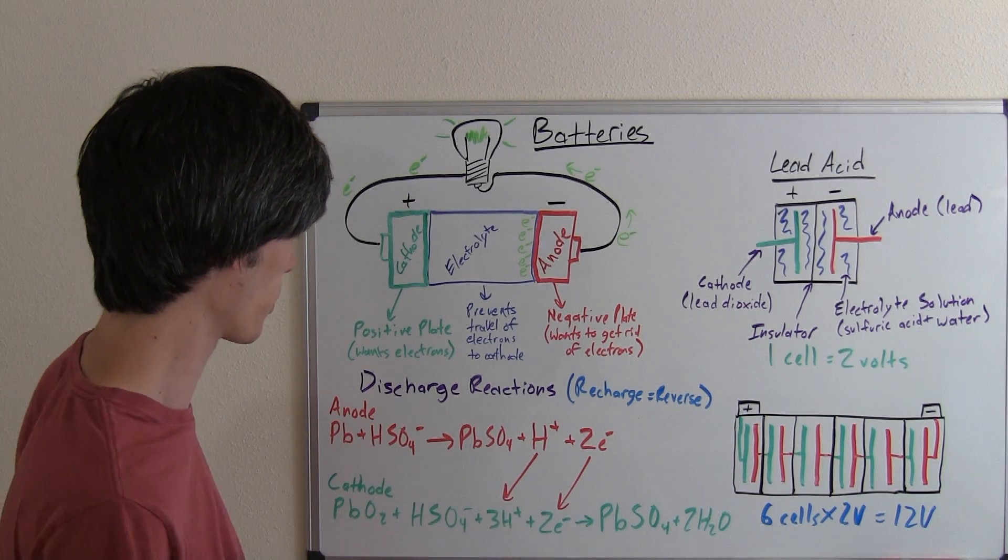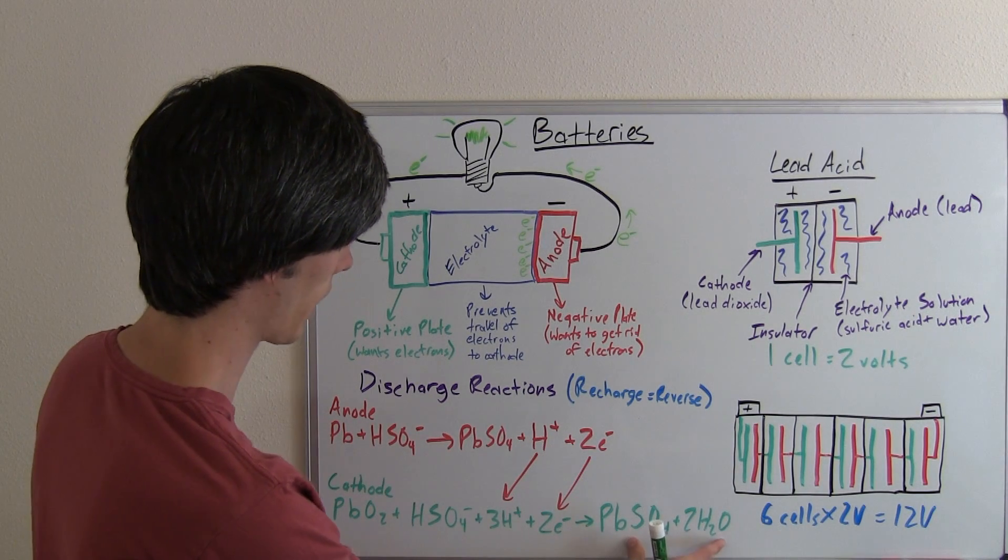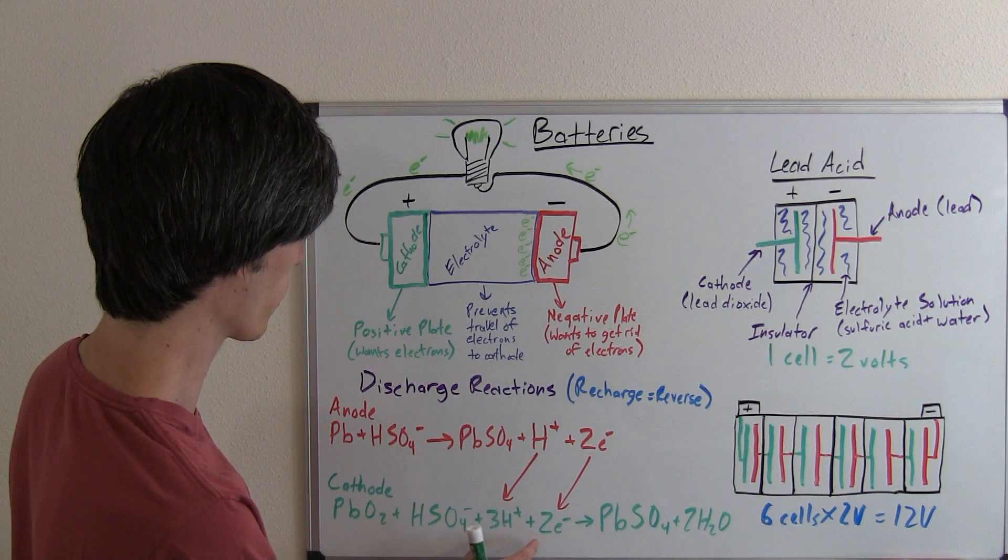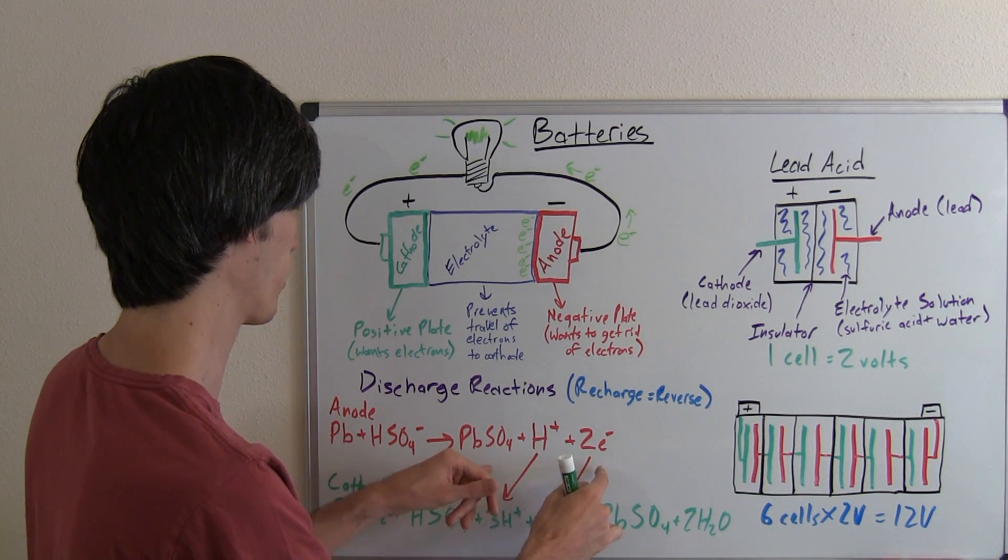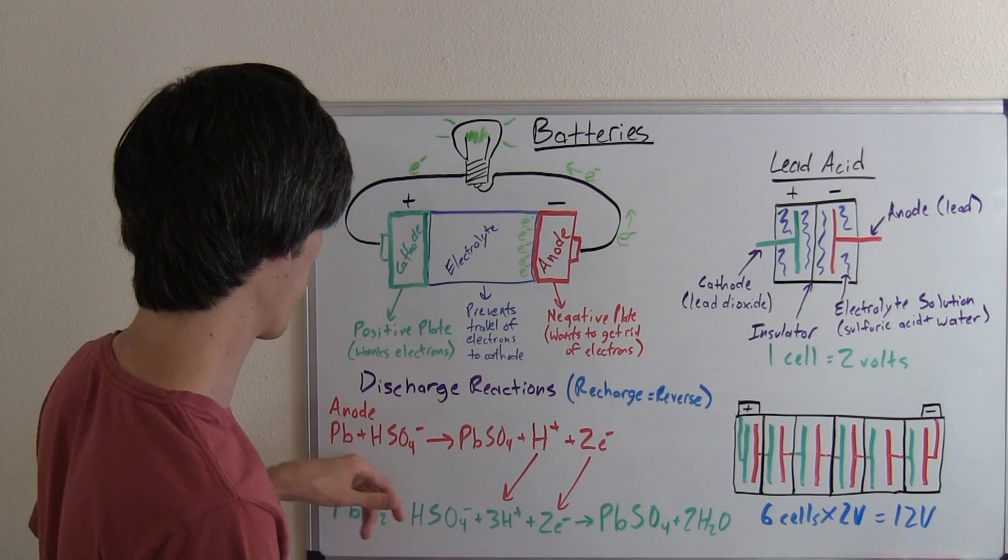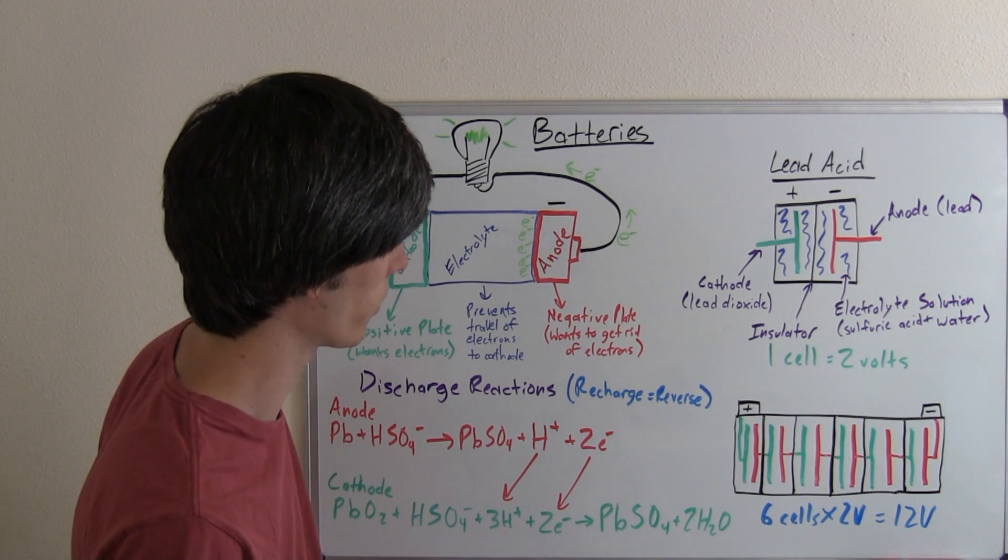To recharge, it's simply the reverse. So, the cathode goes from here to here, those electrons go back to the anode, and the anode uses those electrons plus the hydrogen, and forms lead and sulfuric acid.